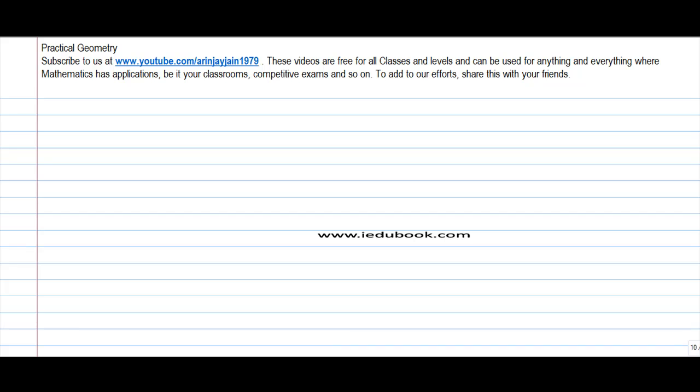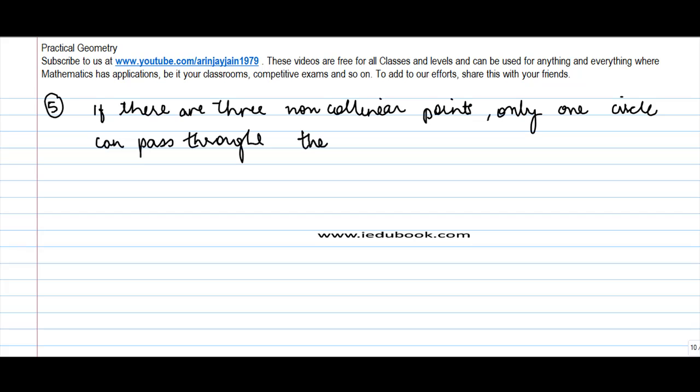Let's see another theorem on circle. This theorem, which is basically theorem number five, says that if there are three non-collinear points, only one circle can pass through these three points.